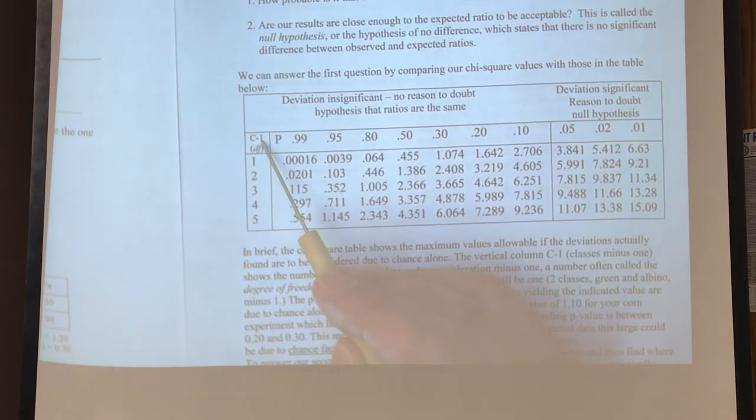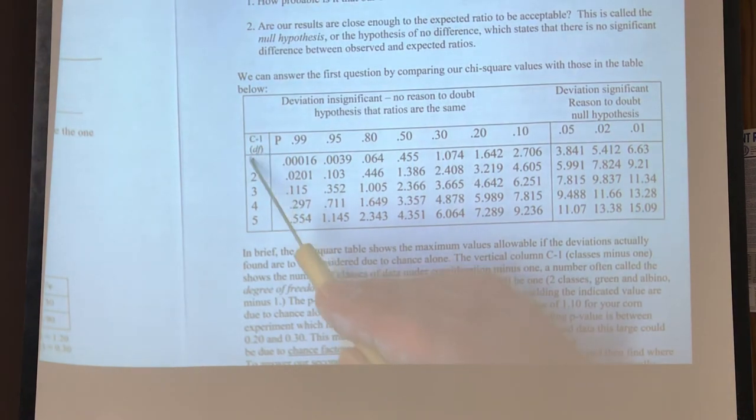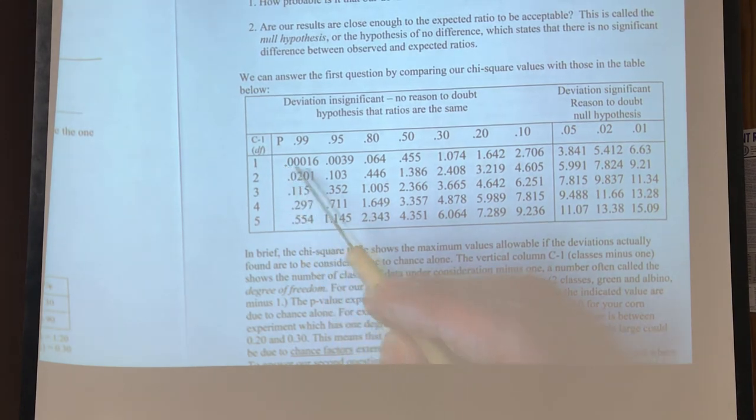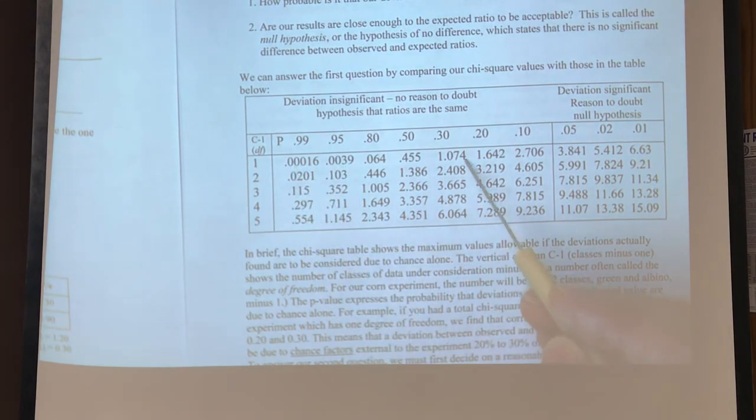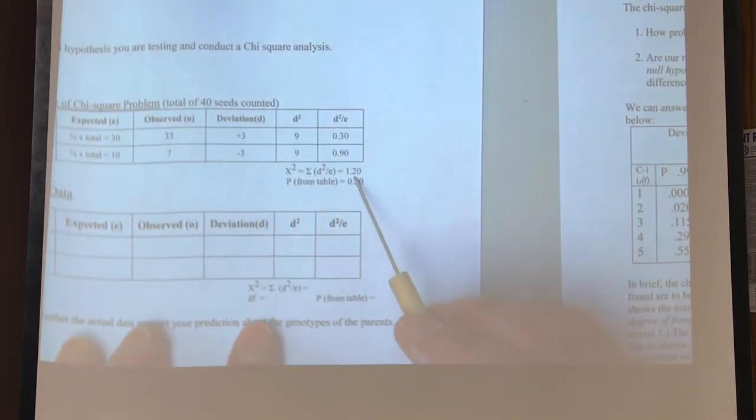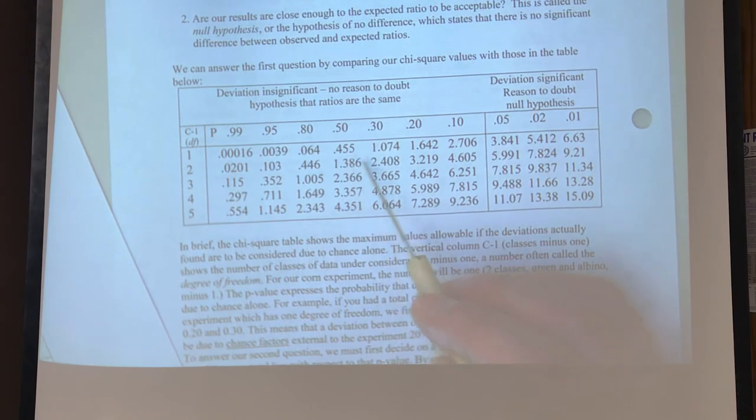So if we come back here, we only have 2 categories. All right, so we're going to take 2 minus 1. So that's our degrees of freedom. So 2 minus 1 is 1. So we're going to look on this row right here to see what is the closest to 1.2. And the closest to 1.2 is 1.074.